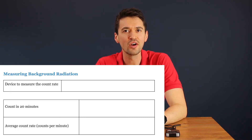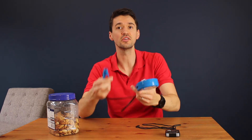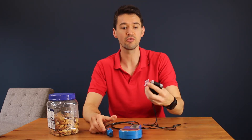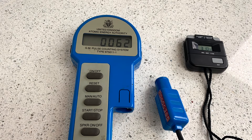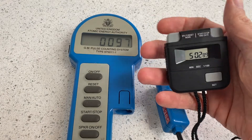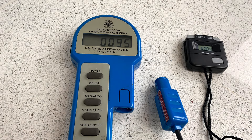We're now going to measure the background radiation. We're using a Geiger-Müller tube attached to a Geiger counter to get the count rate. We're going to time it for five minutes and work out the count rate for one minute. When this read five minutes, the actual reading on the Geiger counter was 95 — so we had 95 counts in five minutes. If I did that a few more times, it might be 96 one time, 94 another; so that's just the average count.